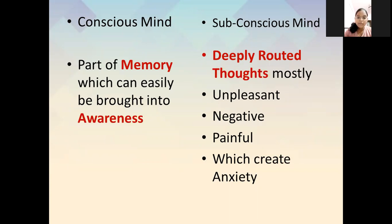The conscious mind is the part of memory which can easily be brought into awareness — things you have done that you are not currently aware of but can be brought to awareness. The subconscious mind, on the other hand, consists of deeply rooted thoughts, mostly unpleasant, negative, painful, and filled with anxiety.